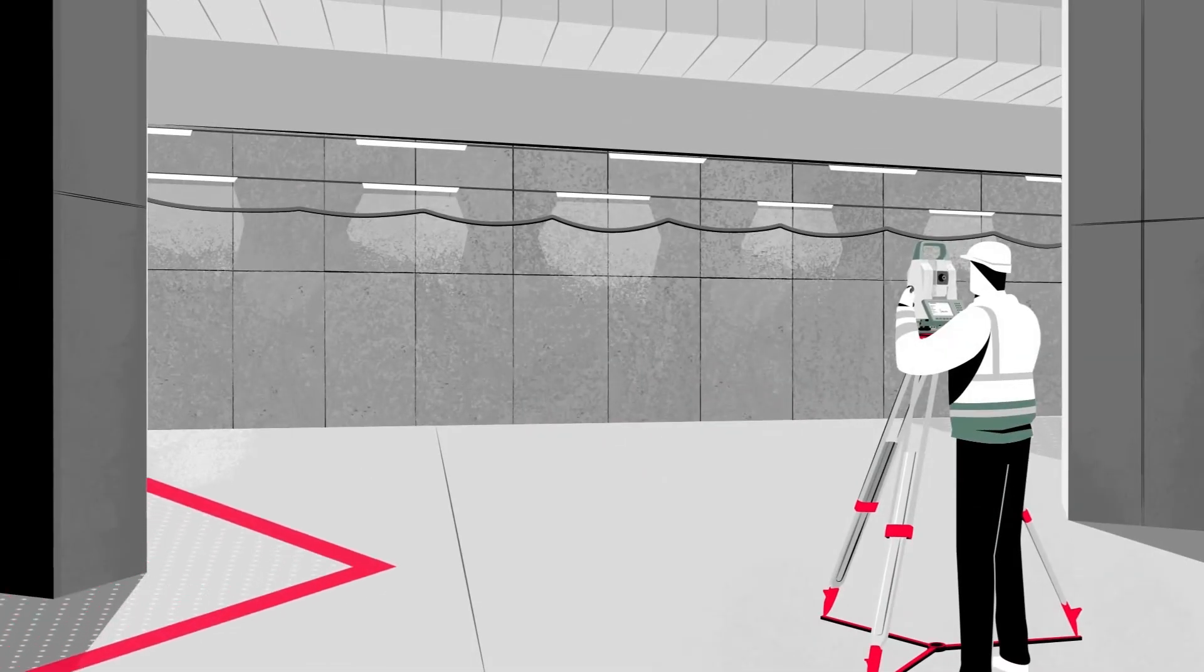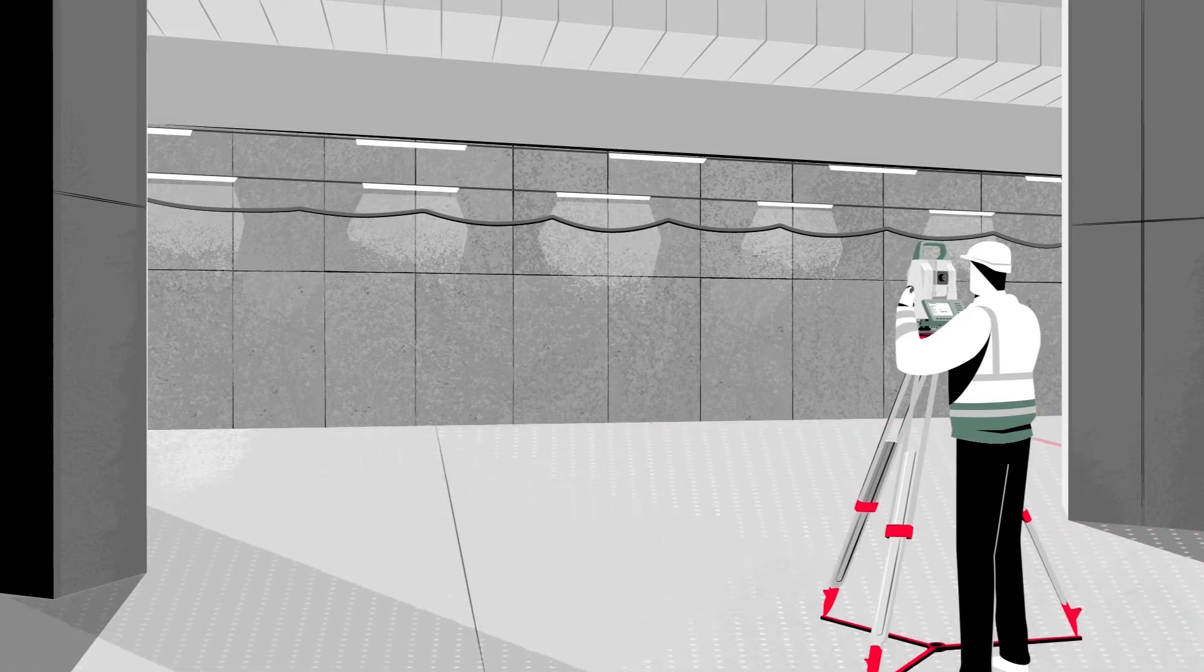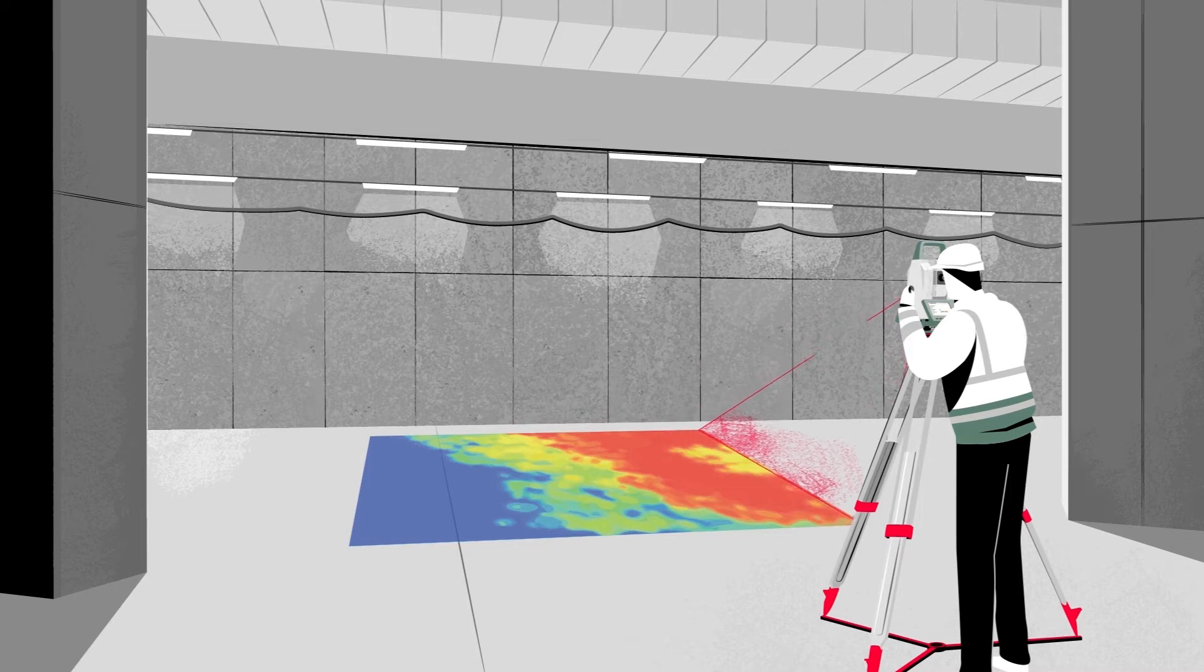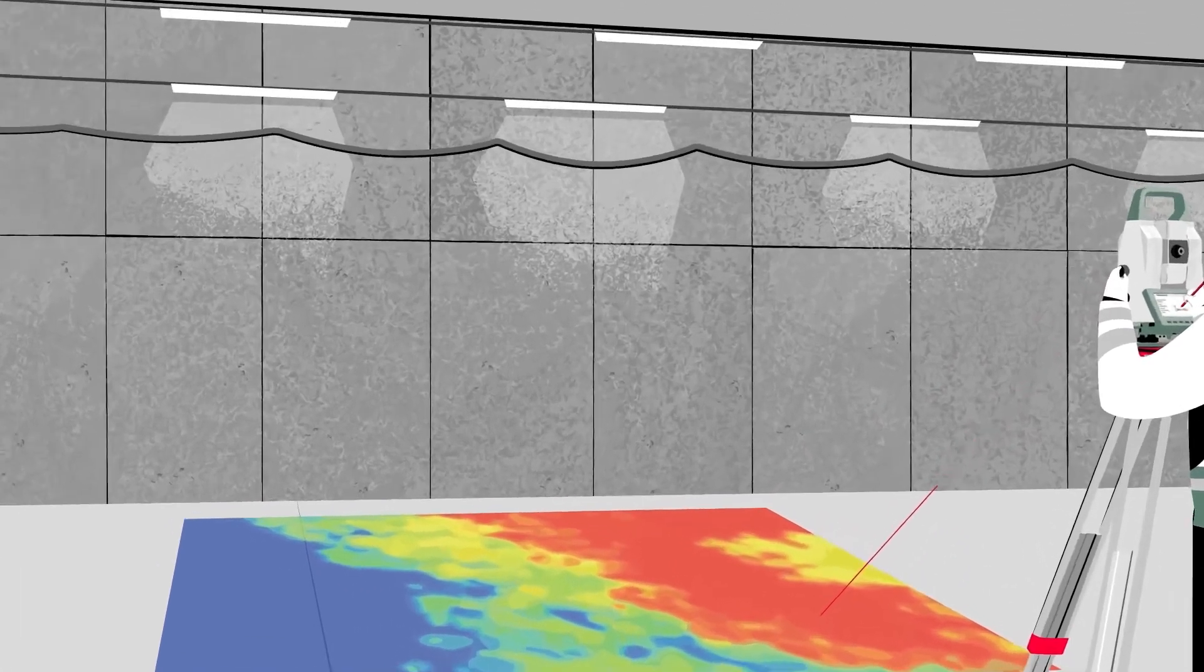For example, checking the flatness of a concrete floor has never been this easy. Just create a 3D visualization of measurements compared to a reference surface and immediately point to the problem areas using the red laser of the Leica Nova MS-60 multi-station.